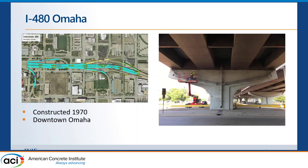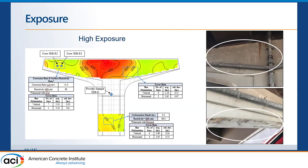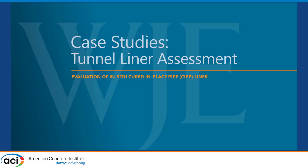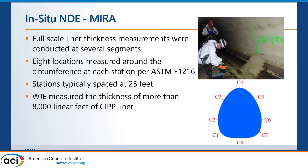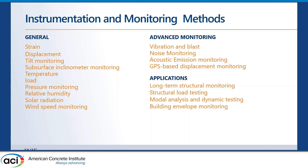Skipping over the NDE parts — corrosion detection, liner thickness detection — let's get to instrumentation and monitoring. There are various methods: strain, displacement, tilt, temperature. There are also general building-type monitoring methods like pressure, temperature, radiation, and wind speed. Then there are advanced monitoring capabilities like vibration, noise monitoring, and acoustic emission, which is generally used to detect wire breaks in pre-stressing strands.